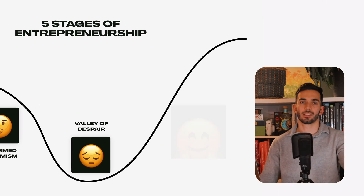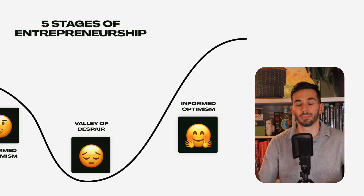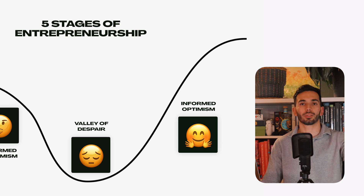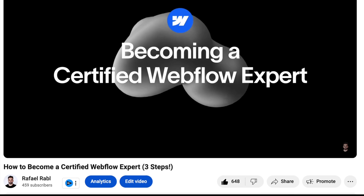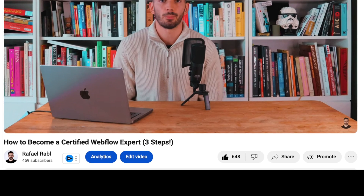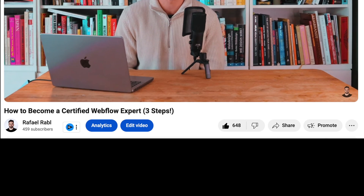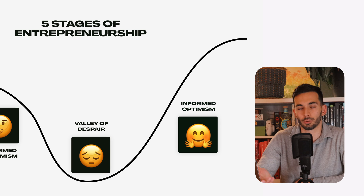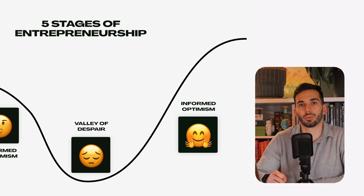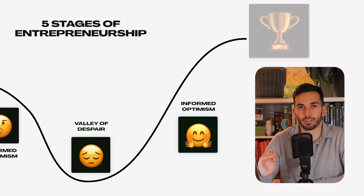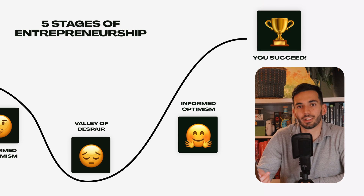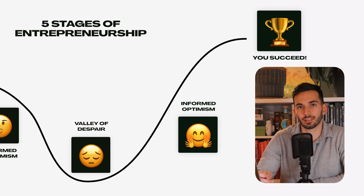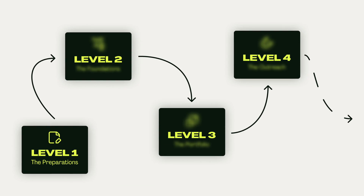But what happens if you don't quit? You get to informed optimism. You see your first results and start to realize that you can actually do this. This happened to me recently when I put out a YouTube video and it got a lot more views than my usual videos — it just showed me that I'm on the right path. You keep going until eventually you hit the final stage, which is the stage of achievement. It just means that you achieve the goal you originally set out to get. If you understand this concept, you cannot fail. You can only fail if you quit.